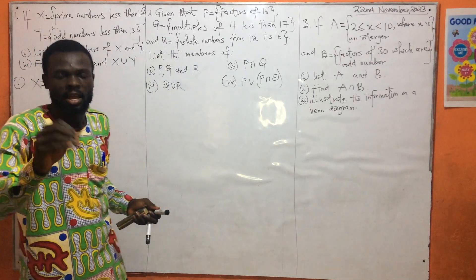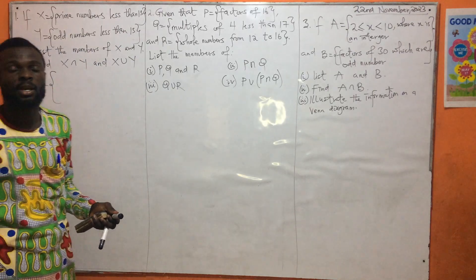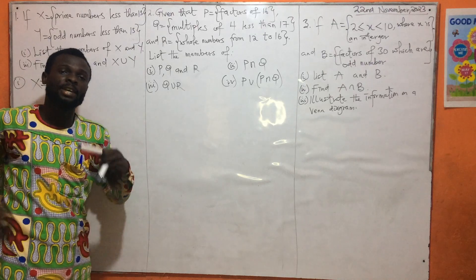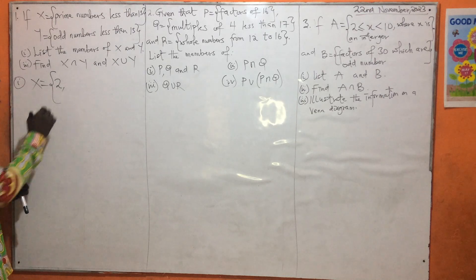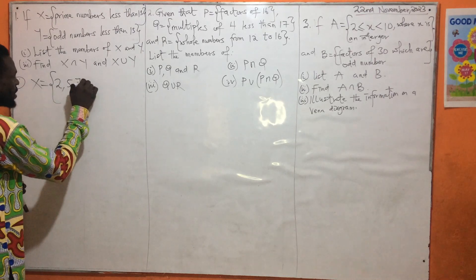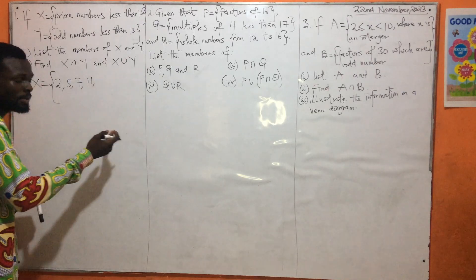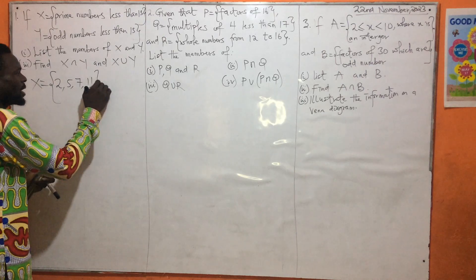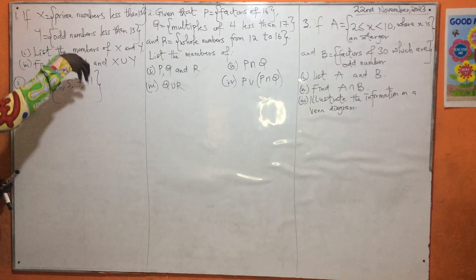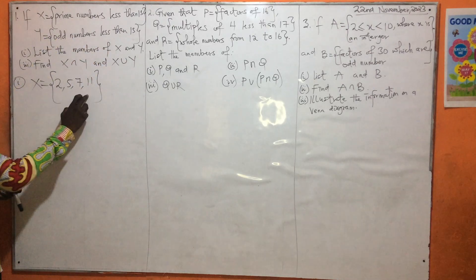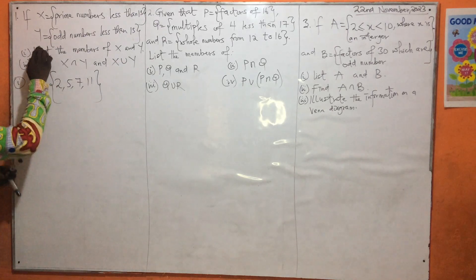First of all, we have to know what a prime number is. A prime number is a number that has only two factors: one and itself. So in finding the prime numbers that are less than 13, we are going to have 2, 5, 7, 11, and 13. But because it says less than 13, we are going to stop at 11. So these are the prime numbers less than 13.